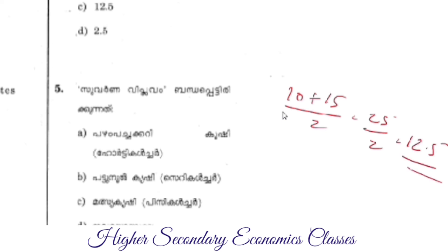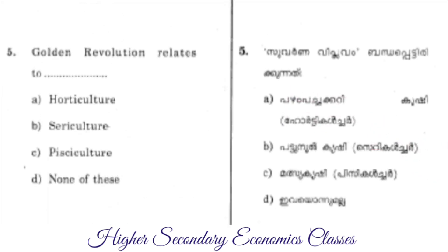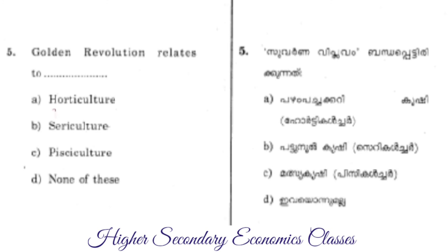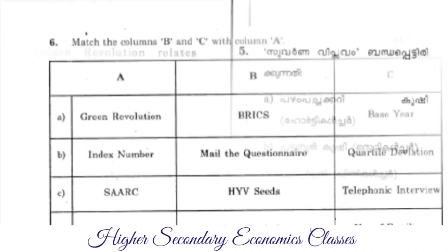The golden revolution is related to horticulture. The options were horticulture, sericulture, pisciculture, and none of these. The correct answer is horticulture.